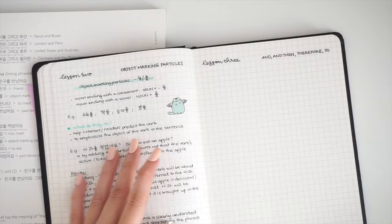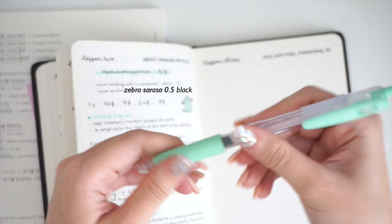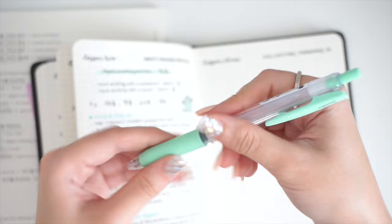My go-to pen for note-taking is the Zebra Sarasa 0.5 black gel pen. The ink writes very smoothly and the 0.5 tip is the perfect size for my handwriting.